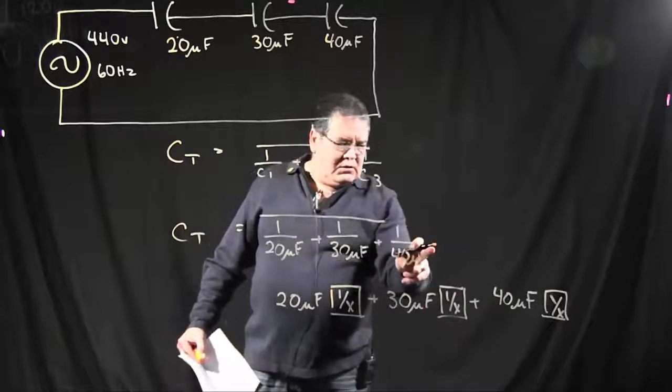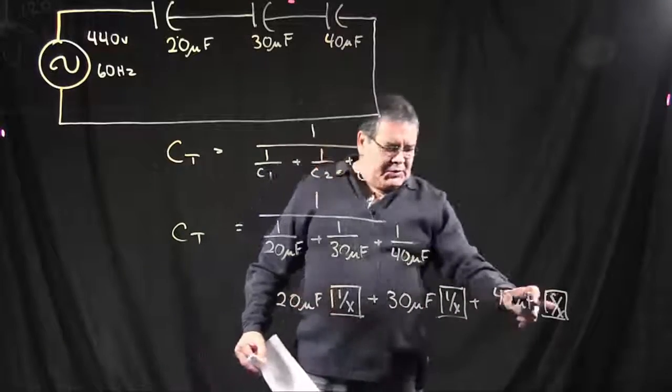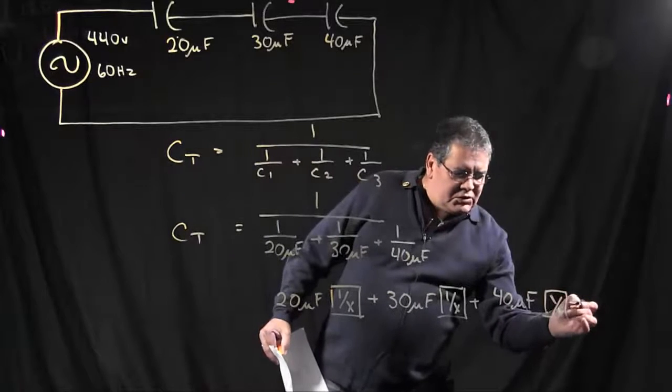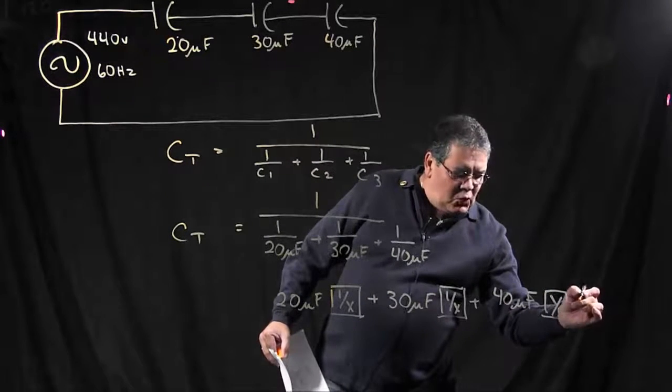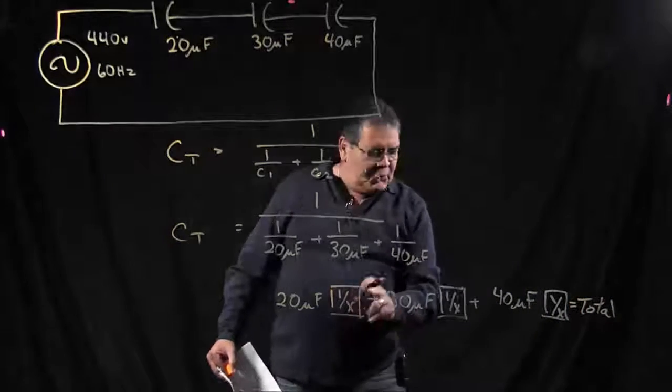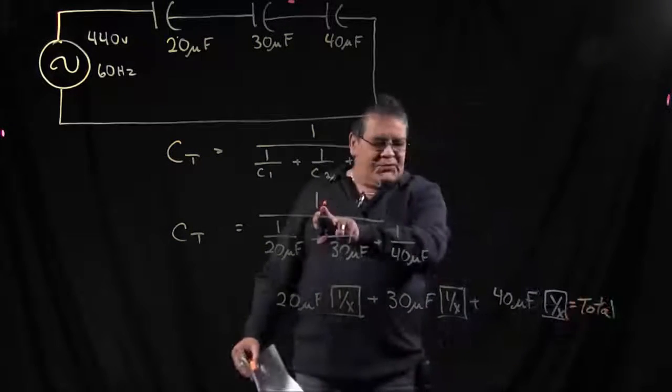Now this gets you to this point. Once you get all of these added up, then you're going to have a total. Once you get your total, you're going to get that total and hit your reciprocal button one more time, which will do this function.